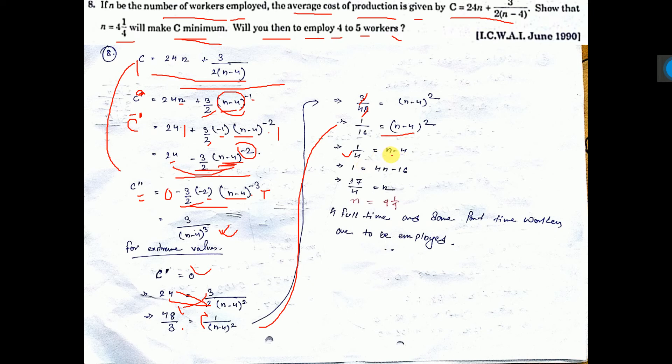Now cross multiply, so 1 is equal to 4N minus 16. 16 will come this side, 17, so 17 by 4, that means N equal to 4 whole 1 by 4.